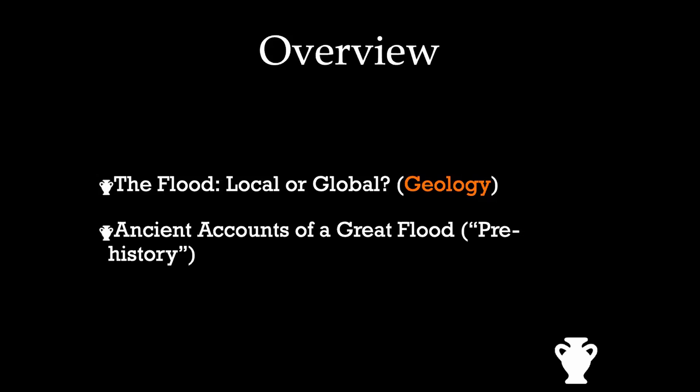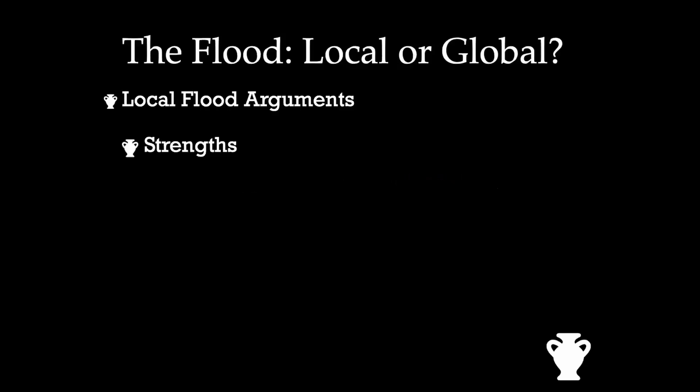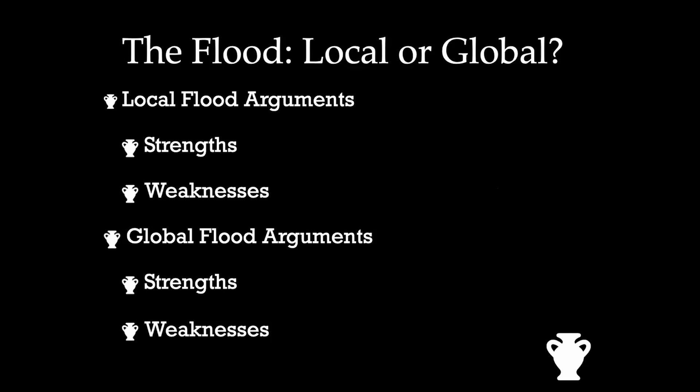When the historical record begins, as soon as humans begin to write, what do they record? They record accounts of a great flood. The earliest historical writings we have — the memory is of a great flood — which we'll talk about in just a moment. There are local flood arguments and global flood arguments. Both views have their problems — they have strengths and weaknesses. I would call the weaknesses anomalies: evidence or data that doesn't really fit the model. I just think that the global flood has the greater evidence behind it, though I'm not committed to it being exactly 6,000 years old.